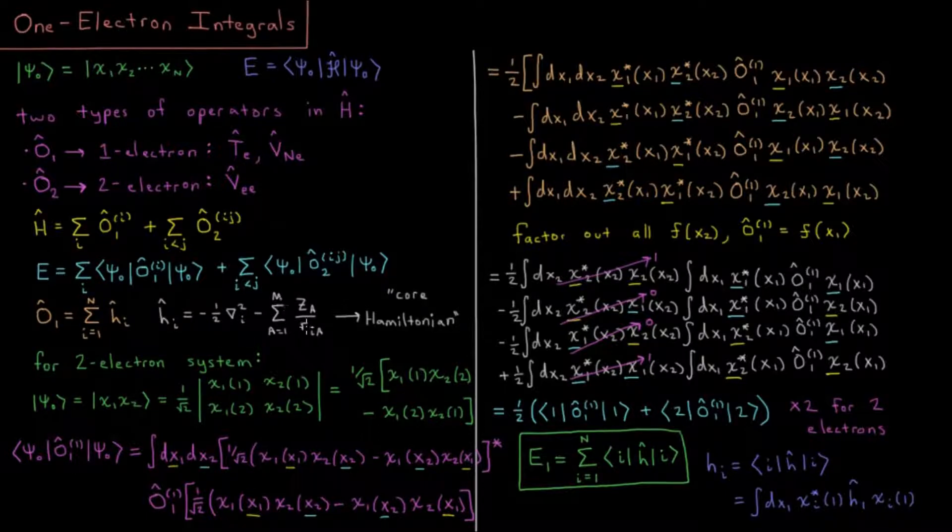So this together, its attraction to all nuclei plus its kinetic energy, is what we would call the core Hamiltonian. Note that there are negative signs on both of those. Negative because there's a negative sign in kinetic energy, and also negative because this is an attraction, meaning it decreases our potential energy.